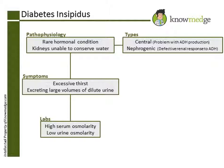Choice C, change in urine osmolarity after water deprivation, will also not help differentiate the two conditions because there would be no change in urine osmolarity in both after water deprivation. In normal individuals who undergo water deprivation, we would expect an increase in urine osmolarity as the body compensates by releasing more ADH.